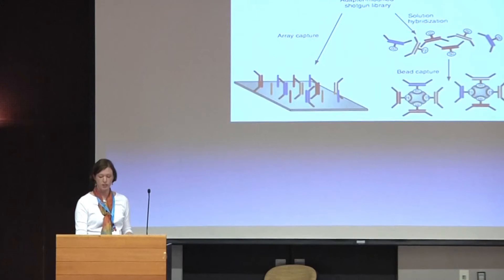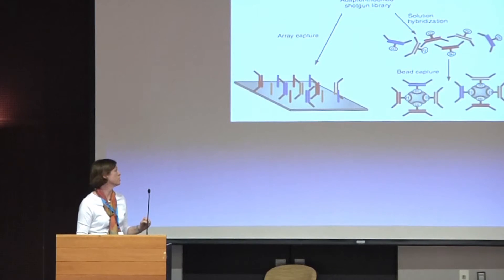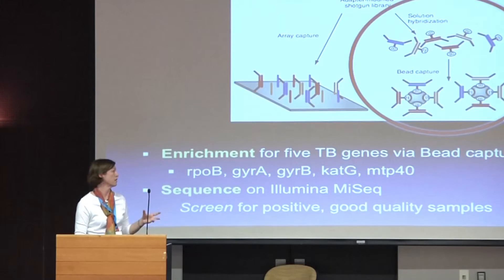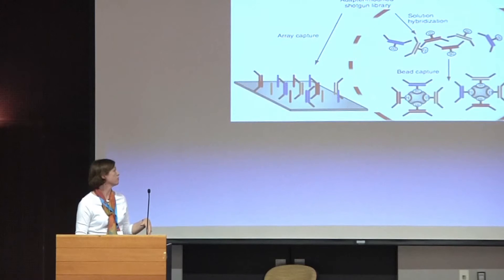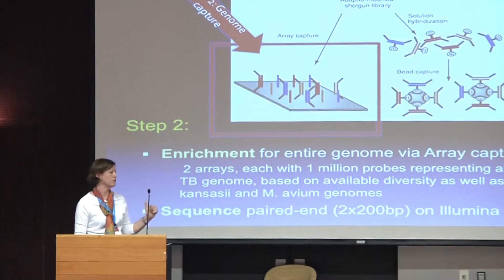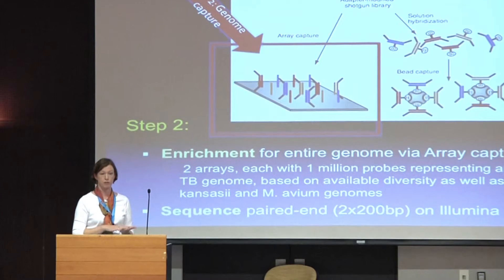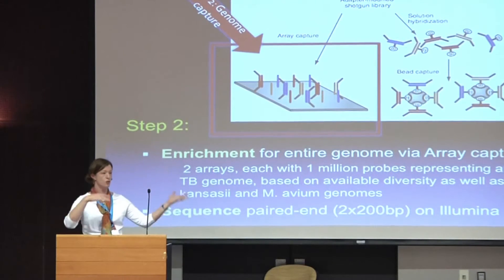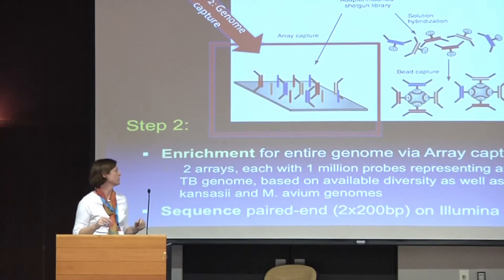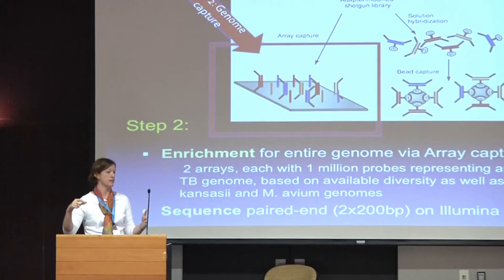The next part of our strategy is to use capture to pull out the DNA of interest — specifically the MTB genome. We first use a capture enrichment that is an in-solution hybridization for five genes and sequence those on the MiSeq. The second thing we do in samples that work well for the five-gene capture is use an array enrichment to target the entire non-repetitive genome. We've made a sort of ancestral genome that puts all those deletions back in, and we've tiled that on two arrays. On the rest of the array we put some M. kansasii and M. avium, which also can cause variants of tuberculosis.